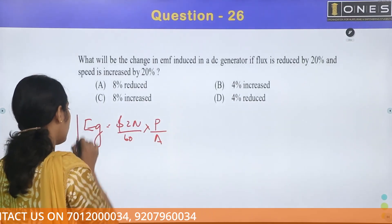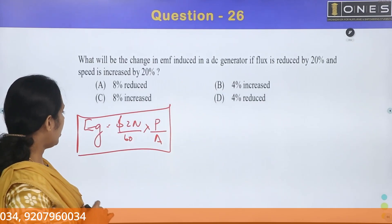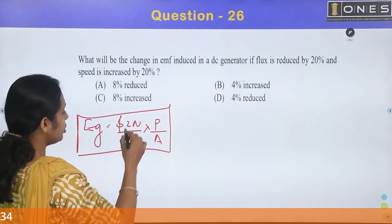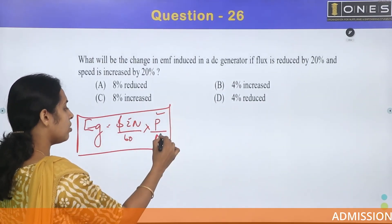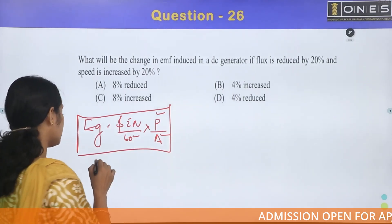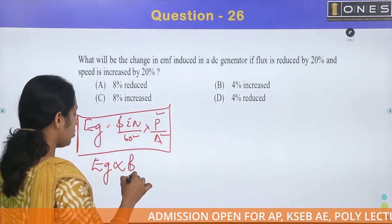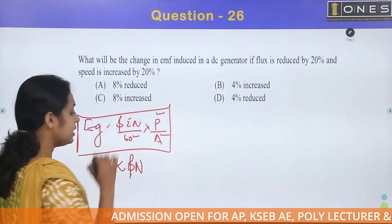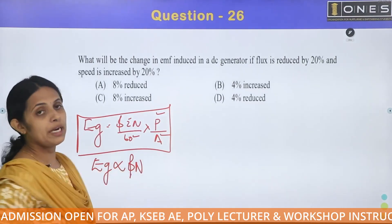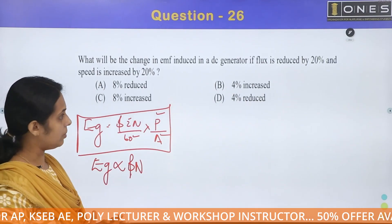For this machine, Z is constant, P is constant, A is constant, and 60 is constant. Therefore, generated voltage is proportional to φ × N — the product of flux and speed is proportional to the generated voltage.